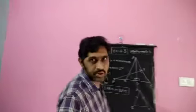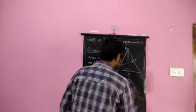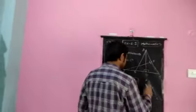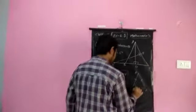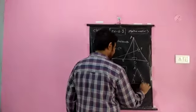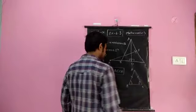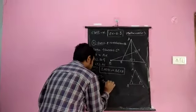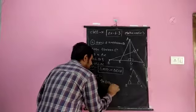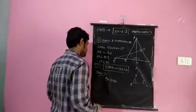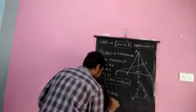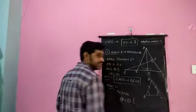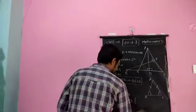By the property of isosceles triangles from Class 9, angles opposite to equal sides are equal. In triangle ABC, the two sides AB and AC are equal, so the angles opposite to them — angle B opposite AC and angle C opposite AB — are equal. Therefore, angle B equals angle C.